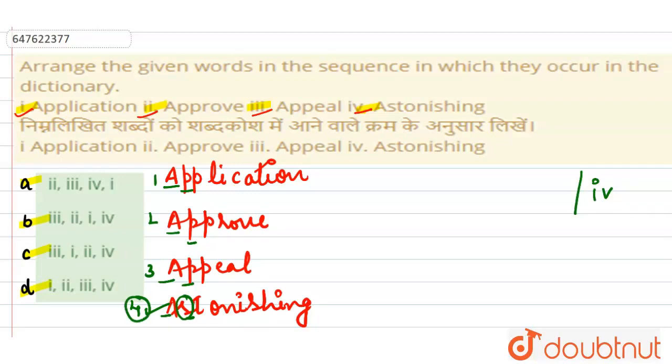Ab humare paas aata hai first, second or third. Ab humne first two letters dekhi hai, ab hum dekhenge iska third letter. Third letter P hai, yaha P hai, yaha P hai - teenon ke third letter same hai. Fourth letter dekhenge: yaha L hai, yaha R hai, yaha E hai.